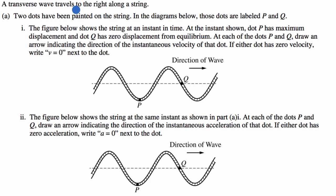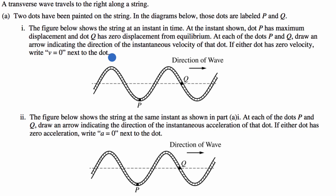We are told a transverse wave travels to the right along a string. Two dots have been painted on the string; in the diagrams below, those dots are labeled P and Q. The figure below shows the string at an instant in time. At the instant shown, dot P has maximum displacement and dot Q has zero displacement from equilibrium. At each of the dots P and Q, draw an arrow indicating the direction of the instantaneous velocity. If either dot has zero velocity, write V equals zero next to the dot. Pause this video and try it on your own before I work through it.